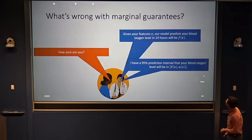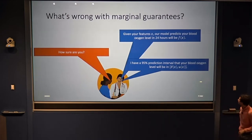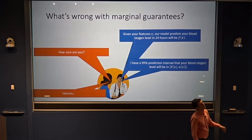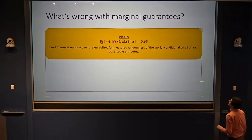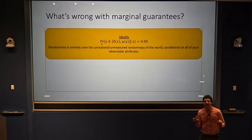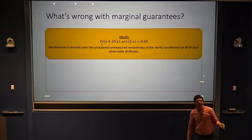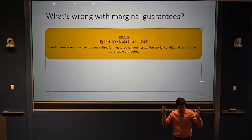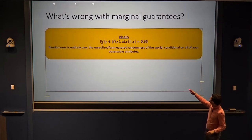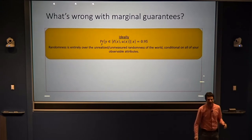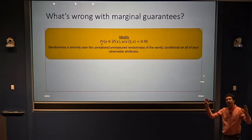The doctor might say: I've got a 95% prediction interval that your blood oxygen level will be within some bounds. What the patient might hope this means is a conditional guarantee — that the probability the patient's blood oxygen level is between our predicted bounds, conditional on everything we know about them from their medical chart x, really should be 95%. But if you think about it, this kind of statement is impossible to make. Machine learning is a statistical methodology — you can't make statistical statements about individuals.